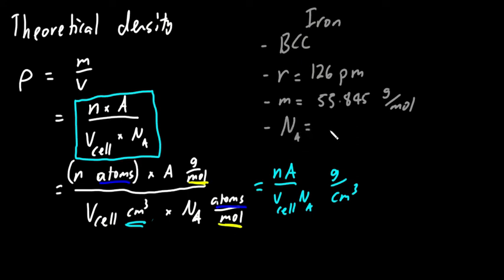Avogadro's number, we're just going with 6.022 times 10 to the 23, not negative, 10 to the 23 atoms per mole. So these are our important numbers to work off.